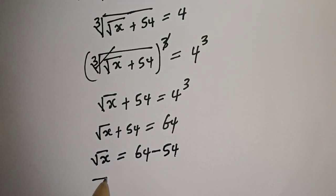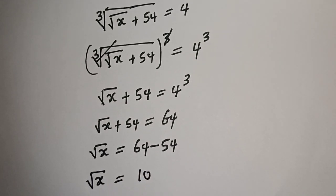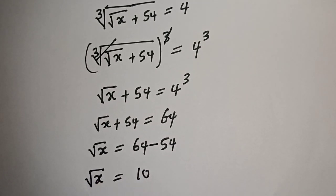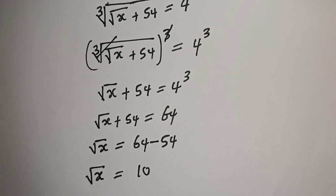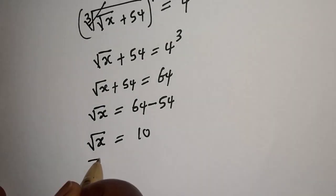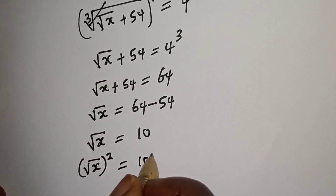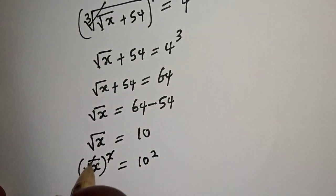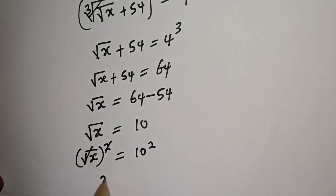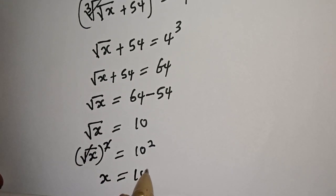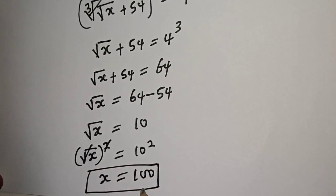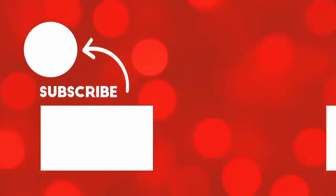Square root of s is equal to 10. Now let's take the square of both sides: square root of s, squared, equals 10 squared. This cancels the square root, giving us s is equal to 100. This is the final answer. If you enjoyed the class, please don't forget to like, share, comment and subscribe. Thank you.